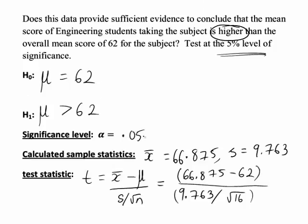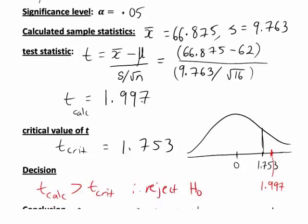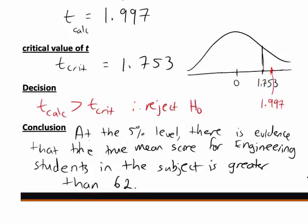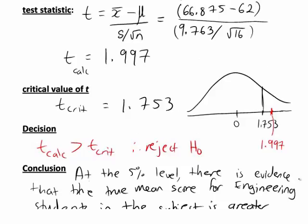So if we look back at our process that we've followed here: first we set up our hypothesis, found our significance level, we then found the calculated value of the t statistic from our data and compared that with the critical value of t, which could be obtained from statistical tables. We then used that information to make a decision about the null hypothesis. In this case, because we rejected H0, that meant we did have sufficient evidence to conclude there was a difference of the type we were looking for with H1.